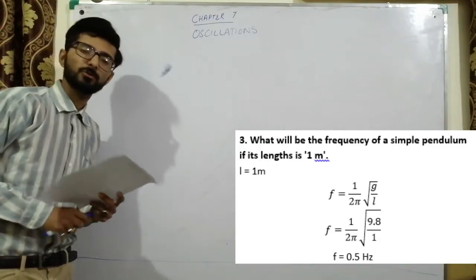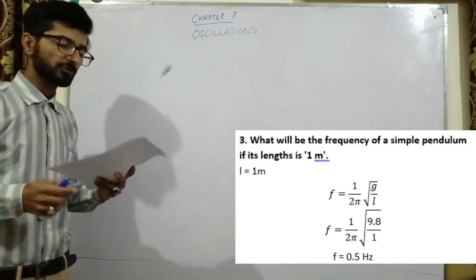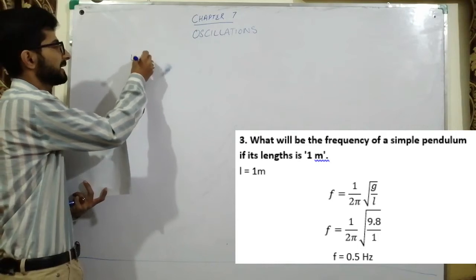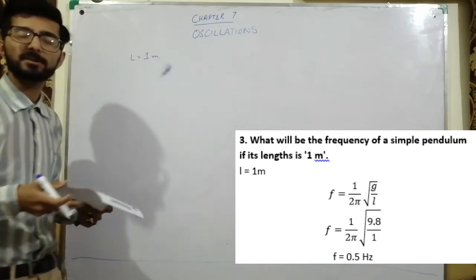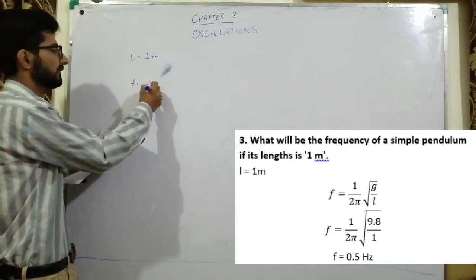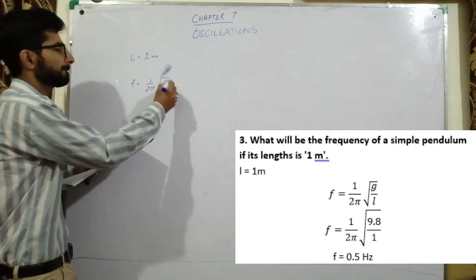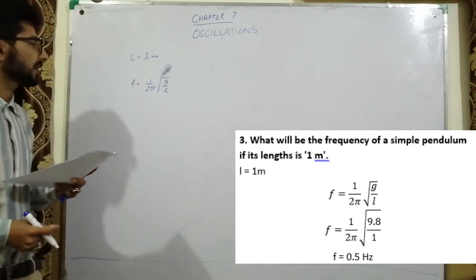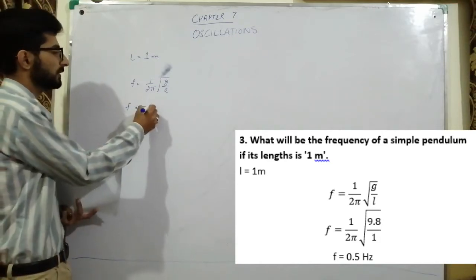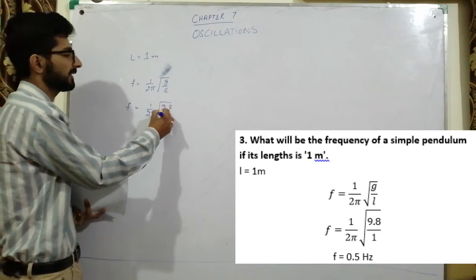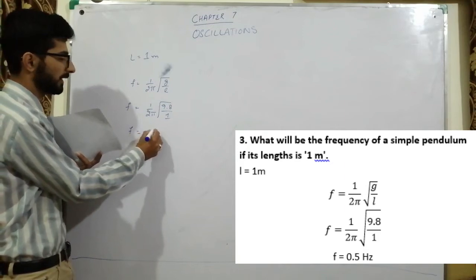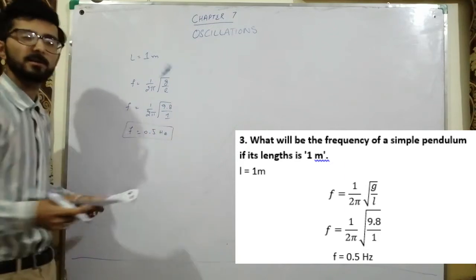Question number 3: What will be the frequency of simple pendulum if its length is 1 meter? The frequency F = 1/(2π)√(g/l) = 1/(2π)√(9.8/1). The frequency will be 0.5 hertz.